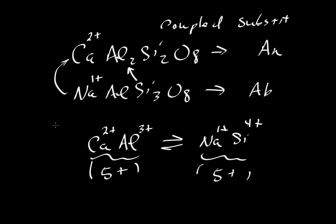In simple substitutions the charges are the same. So if we're going to exchange magnesium for iron they both have a 2+ charge so they don't have to go in as a couple with anything else.